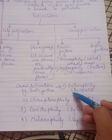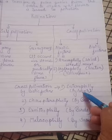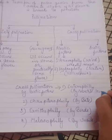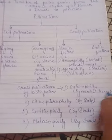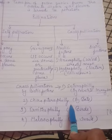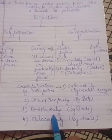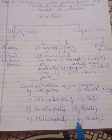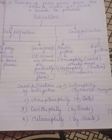Entomophily is pollination by insects — a major example is the honeybee, which helps in cross-pollination. Chiropterophily is by bats, ornithophily is by birds, and malacophily is by snails.